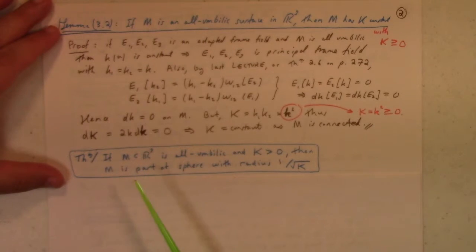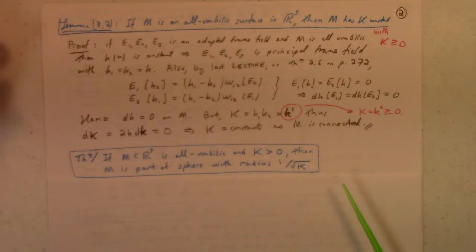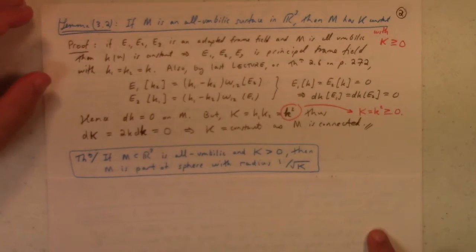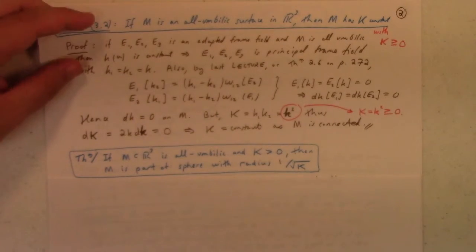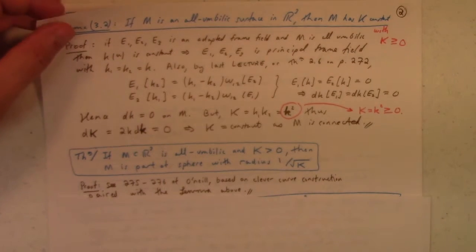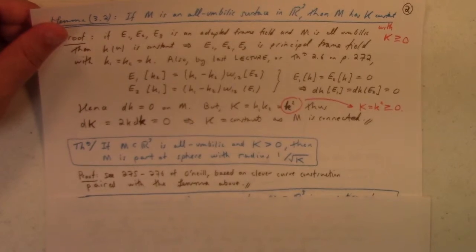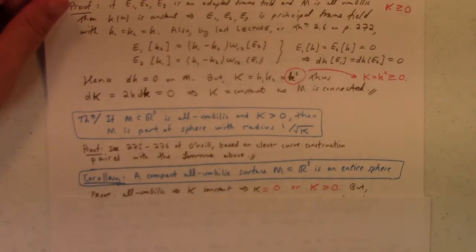So that's lovely. Another theorem that follows from this lemma that I will not prove, but I will state. If m, a subset of r3, is all umbilic with positive Gaussian curvature, then m is part of a sphere, with radius 1 over the square root of the Gaussian curvature. Very nice. So this is sort of analogous to, again, that if you have a planar curve, if you have something with torsion zero and constant curvature, then it's part of a circle with radius 1 over the curvature. So that's proven on page 275 and 276 of O'Neill. And it's based on some clever curve construction paired with the lemma above.